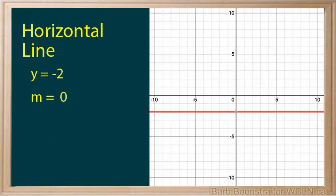Here is another horizontal line. Its equation would be y equals negative 2, and its slope would be 0.